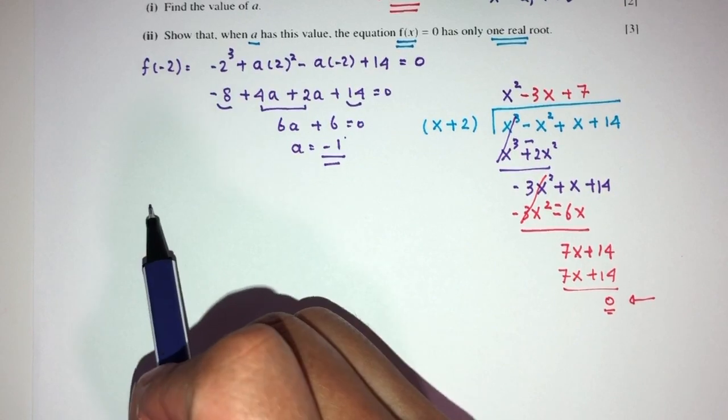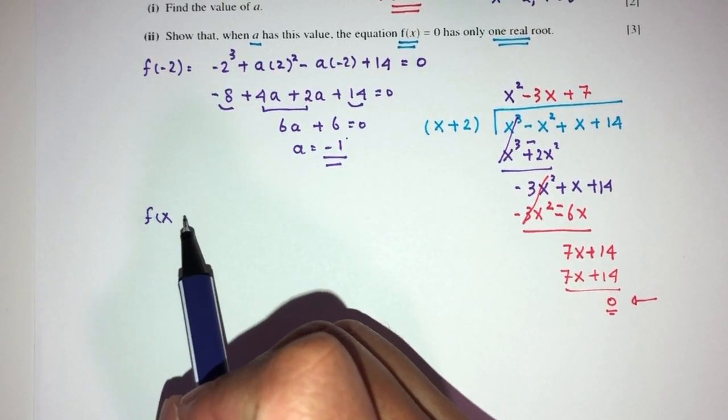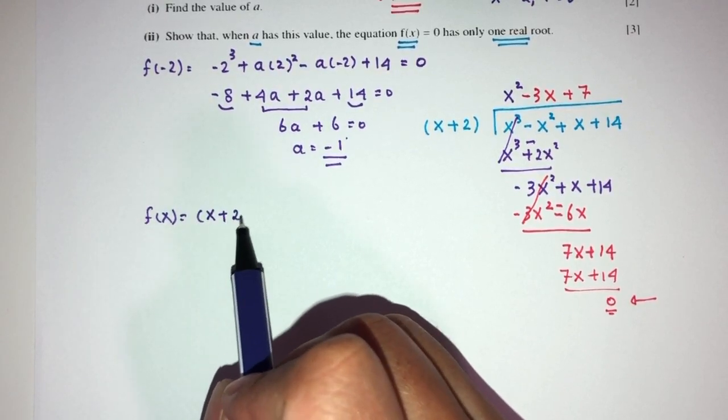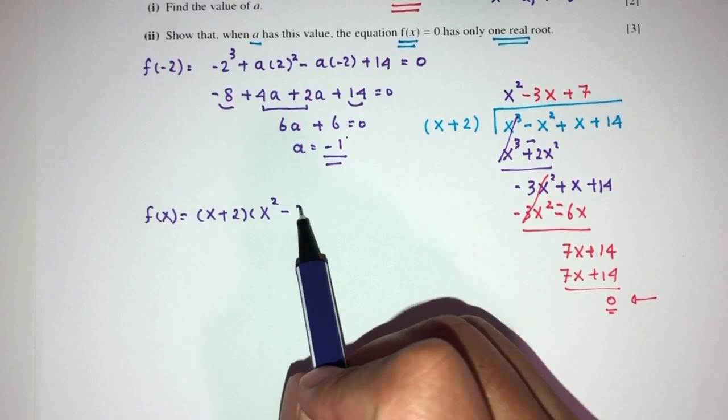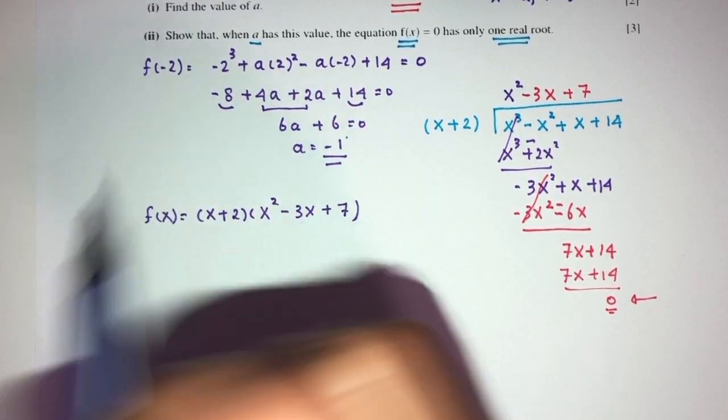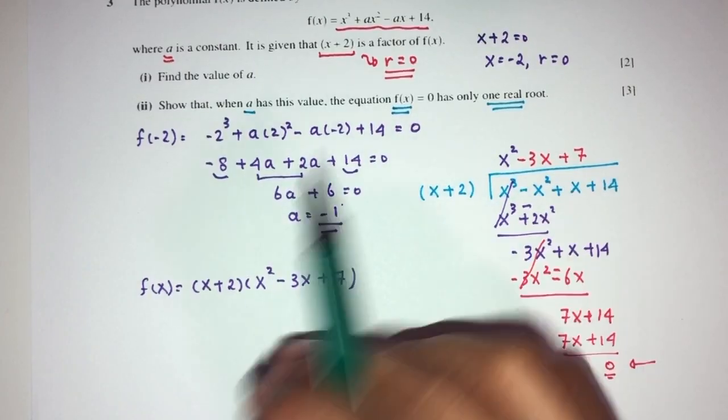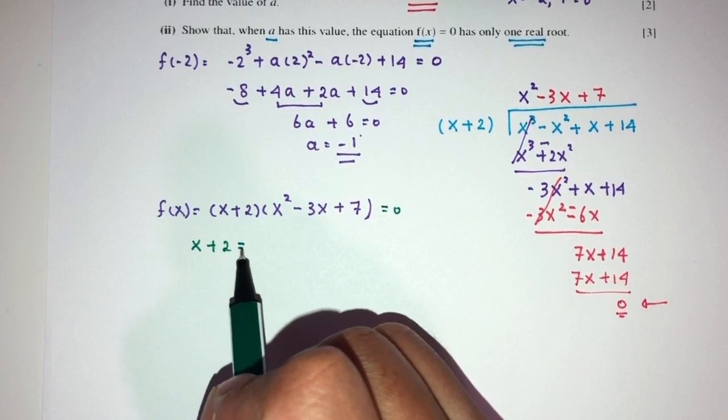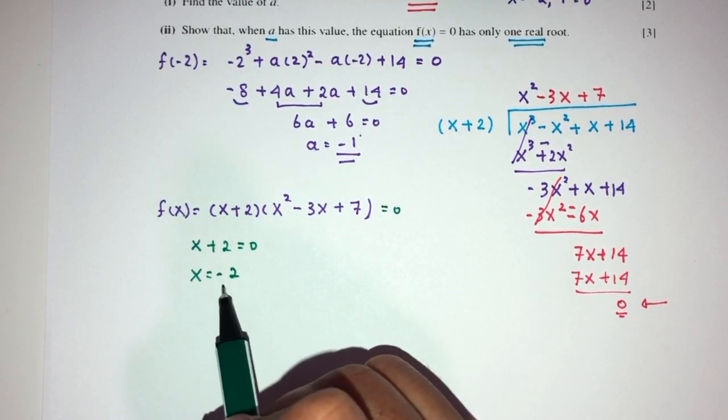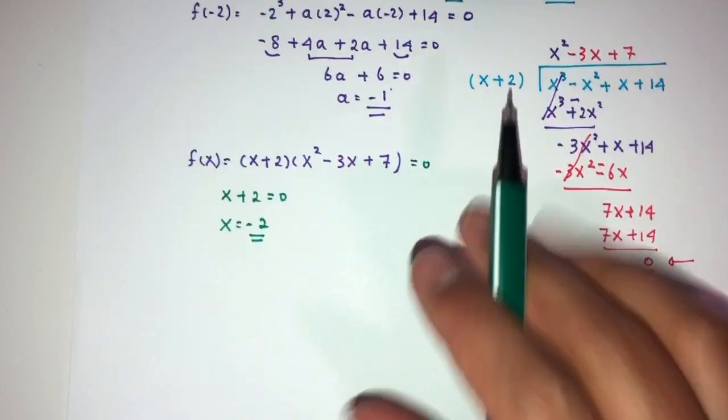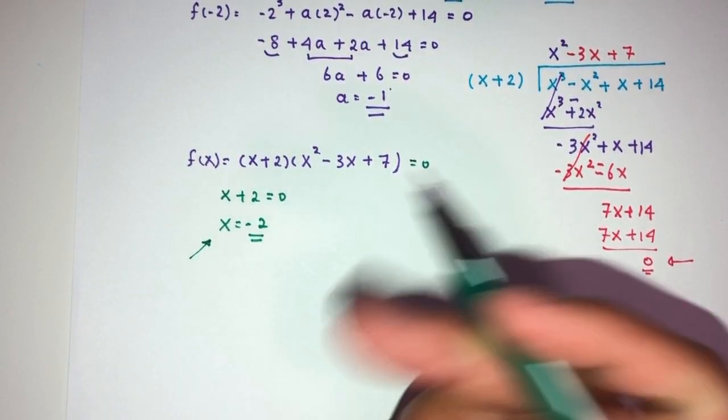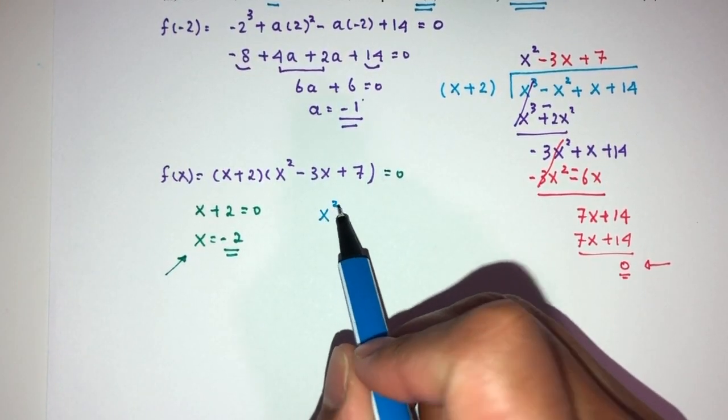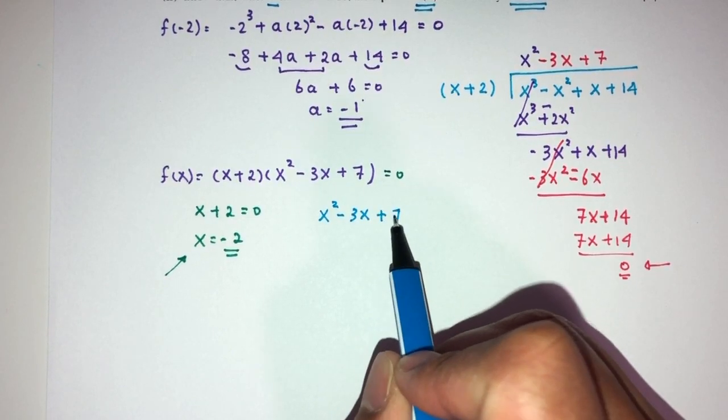So finally, f of x is going to equal my factorization, which is x plus 2 multiplied by x squared minus 3x plus 7. The equation we want to solve is this same thing but equated to 0, which is x plus 2 equals 0, so x will be minus 2. It is one of the roots that we have. I believe this is the only one we will have, but we have to check if this is also going to give you something or not.